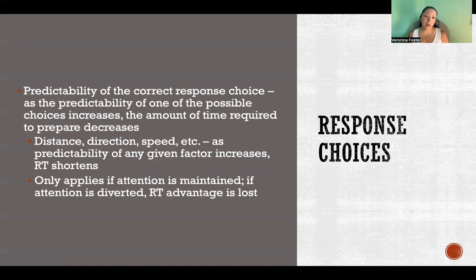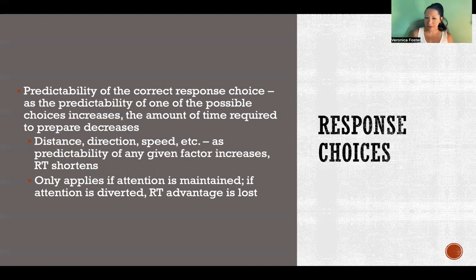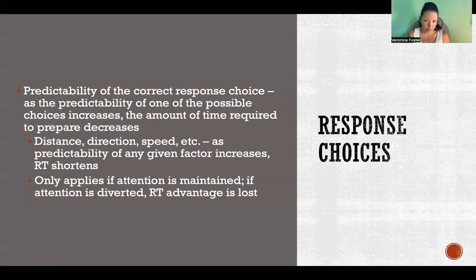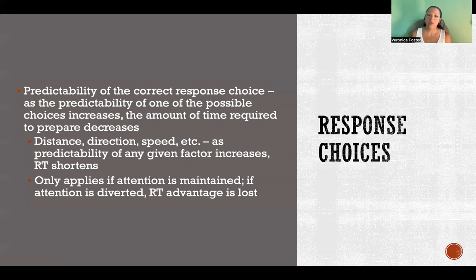The predictability of the correct response choice also matters. As it becomes more predictable that one choice is going to be correct, the amount of time required to prepare decreases. For example, if there's an 80% chance it's going to be the blue light, a person might be very fast pressing that button — but when 20% of the time it's not blue, they'll be much more prone to error, and their reaction time for the non-blue stimulus will be much longer.